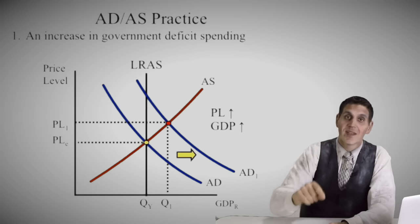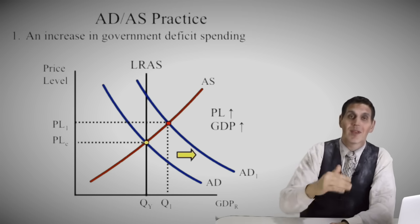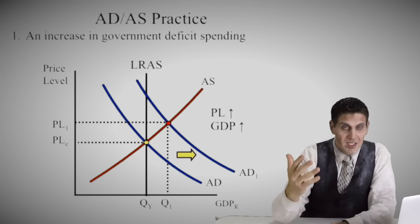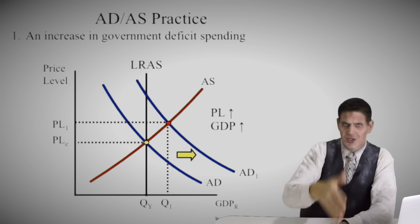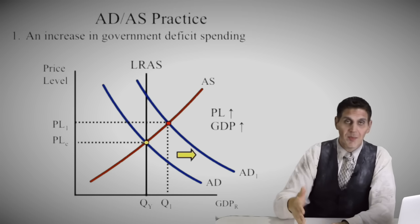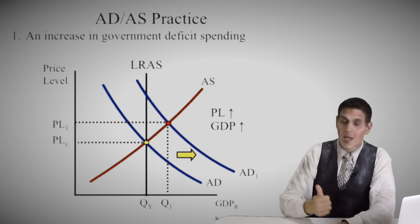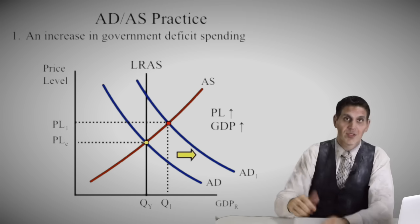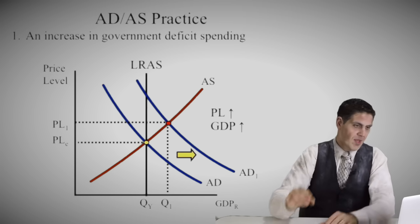Number one: an increase in government deficit spending would increase aggregate demand, because government is a shifter of aggregate demand. Price level goes up, quantity goes up. Done.